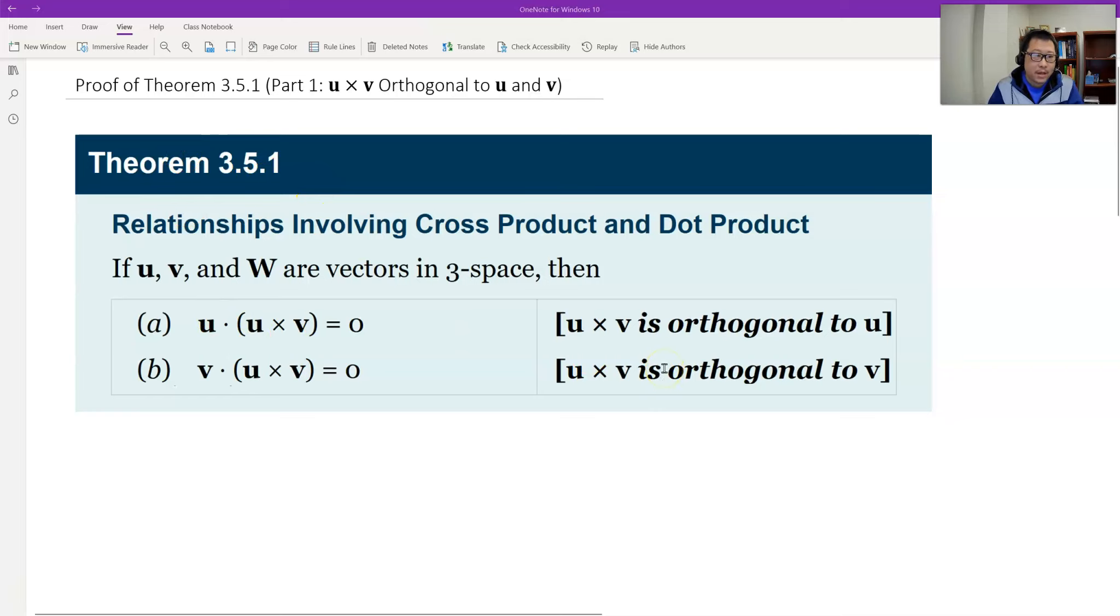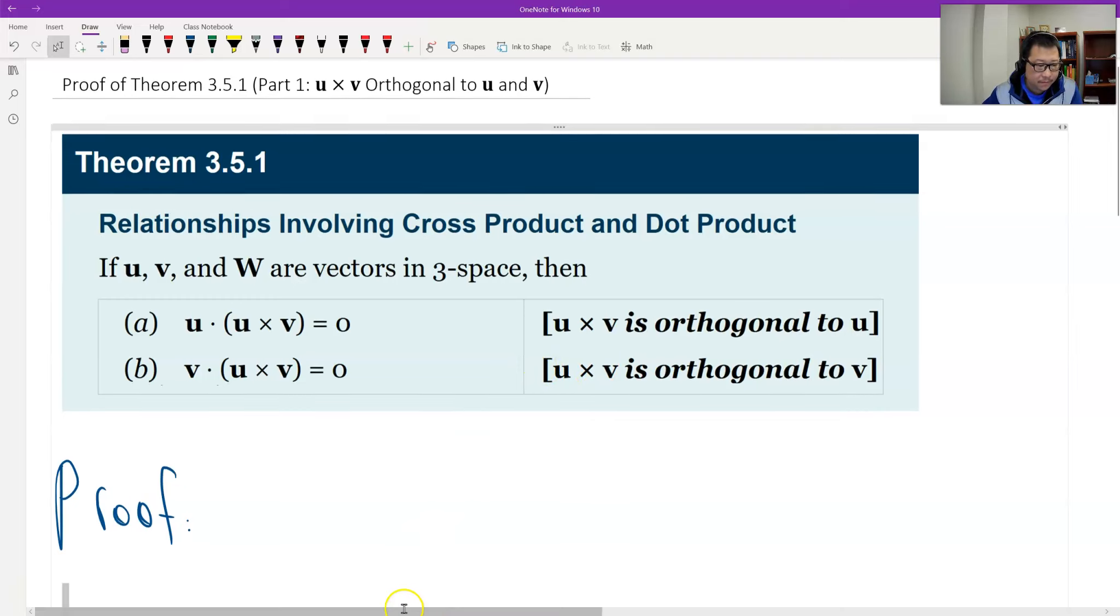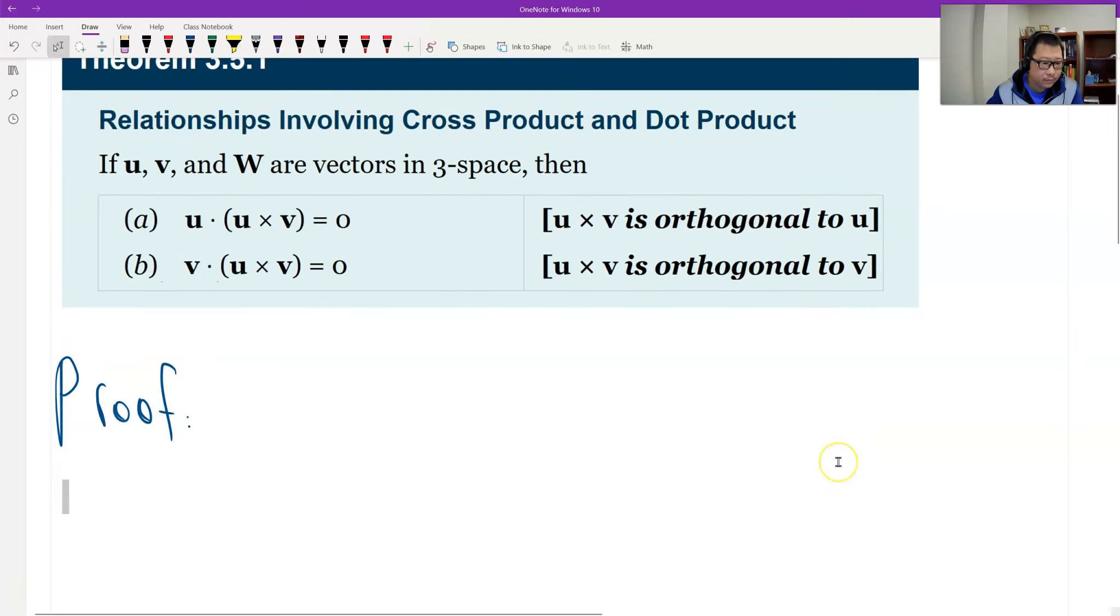So let's look at b first. We prove or we simply verify. Look at b, and from a, we can prove for b. Later we will verify a.